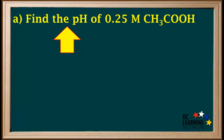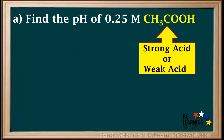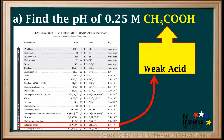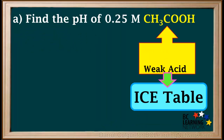We'll start with part A: finding the pH of a 0.25 molar solution of ethanoic acid. Whenever we're asked to do a calculation with an acid, the first thing we always have to do is identify the acid as strong or weak. We see by its position on the acid table that ethanoic acid is a weak acid. When doing calculations involving weak acids, we must use an ICE table.